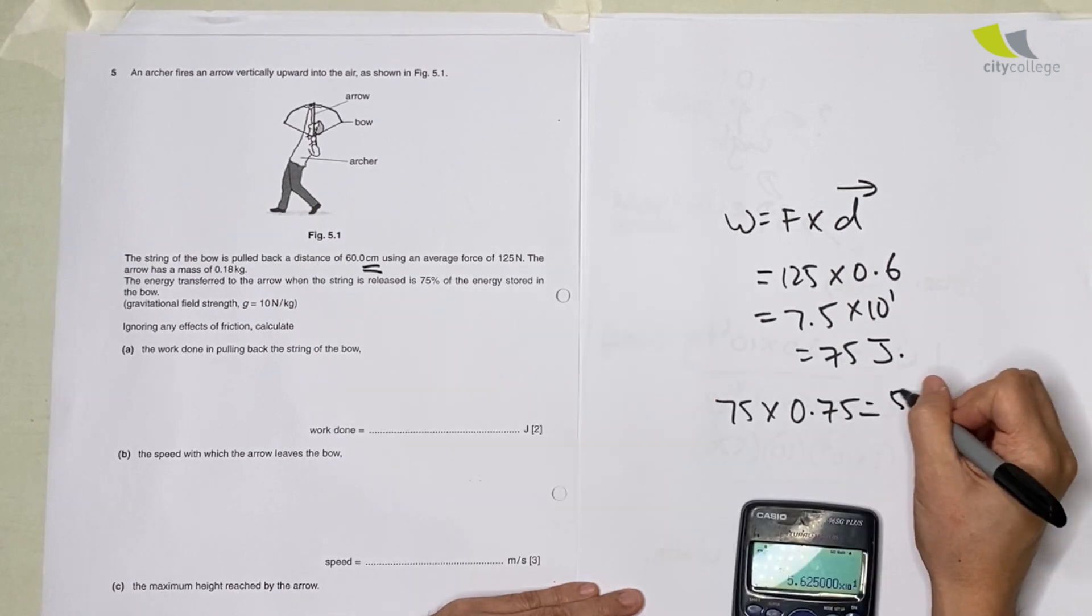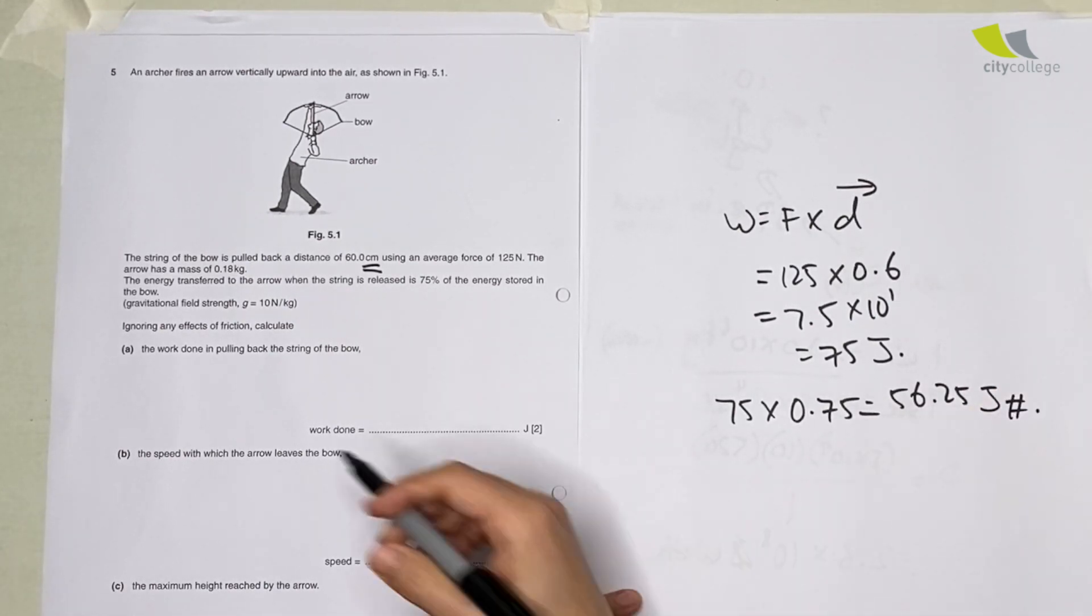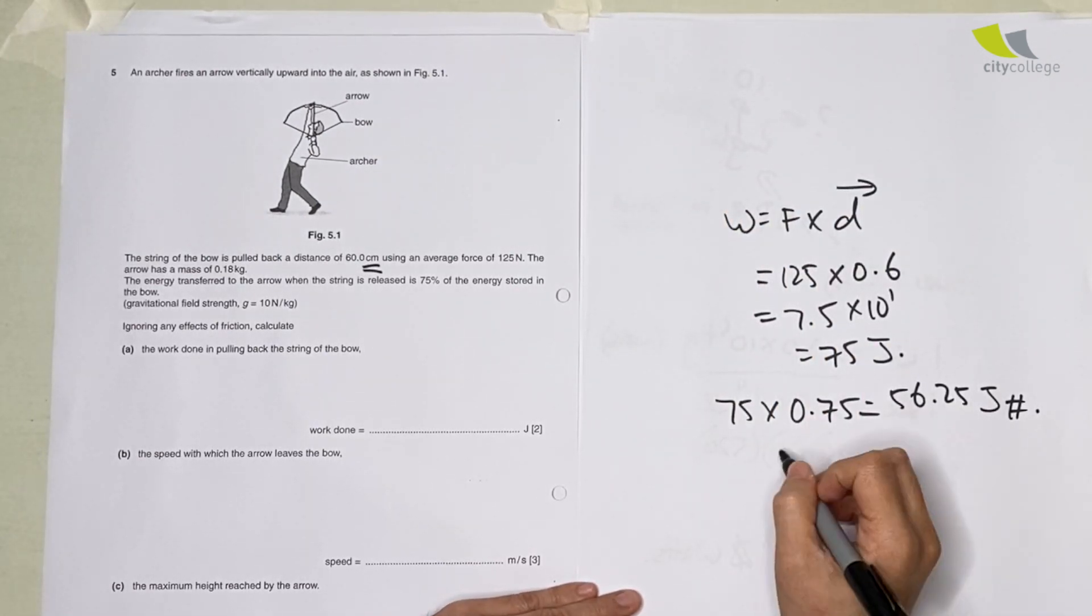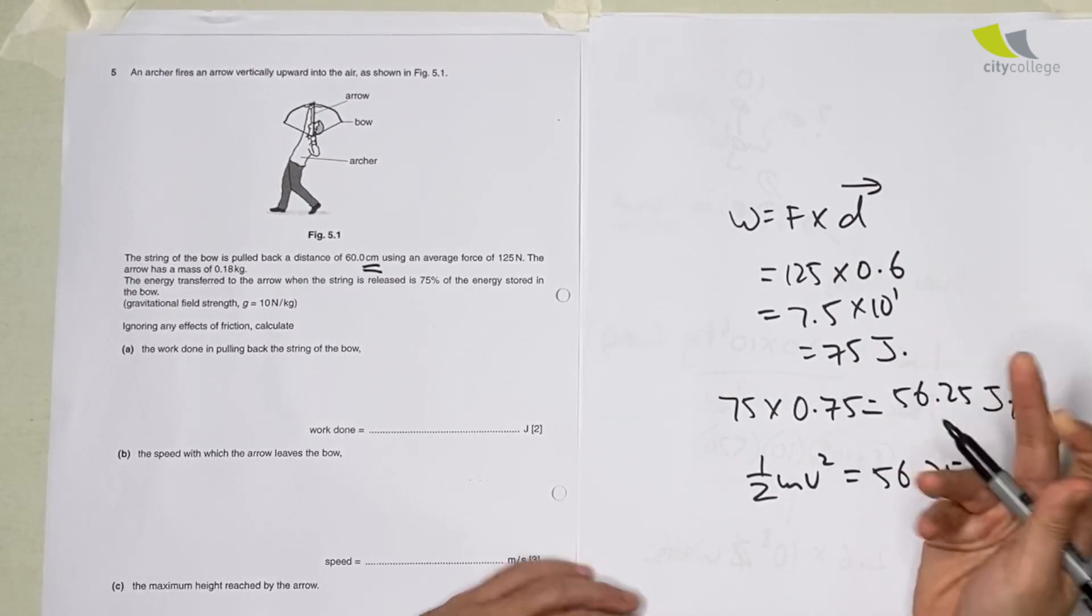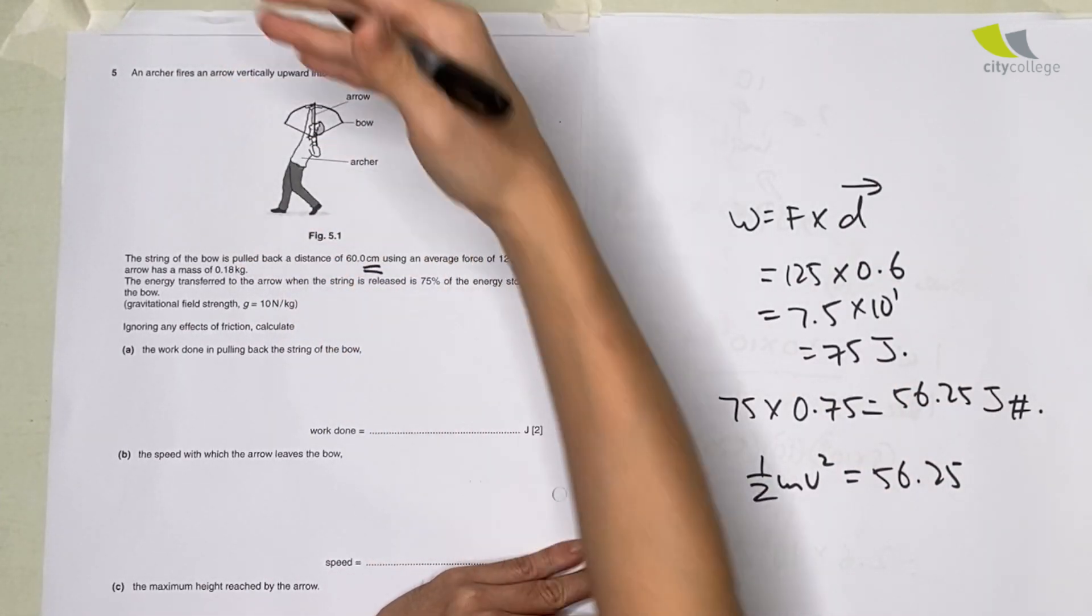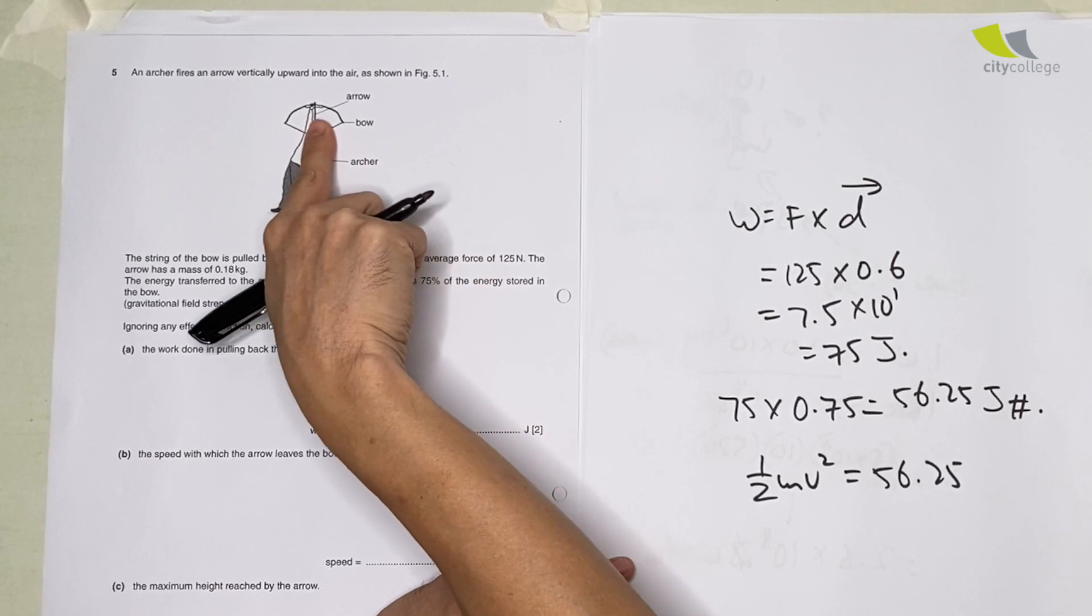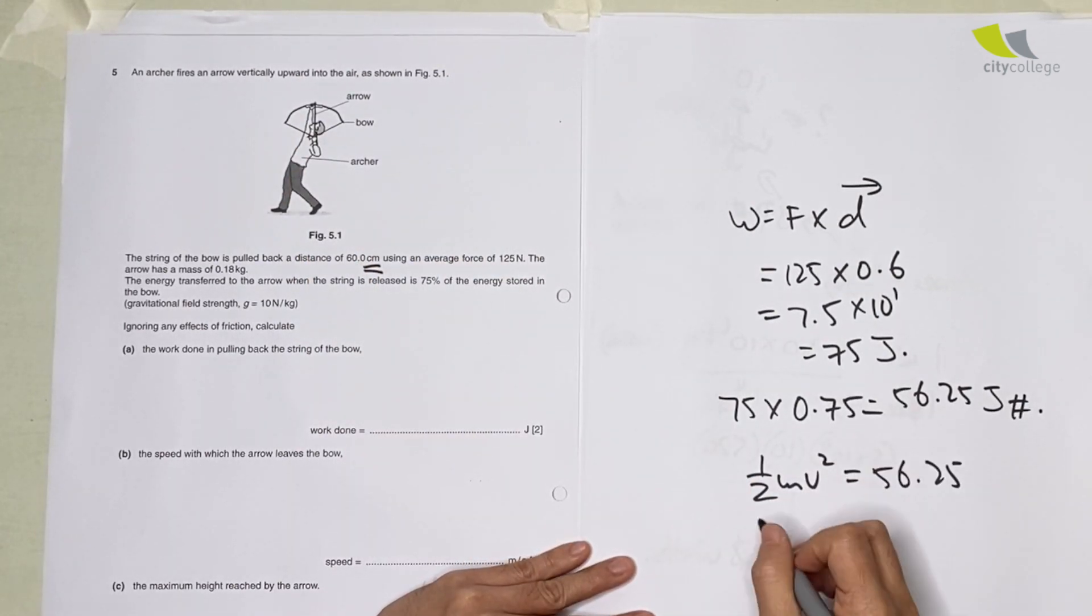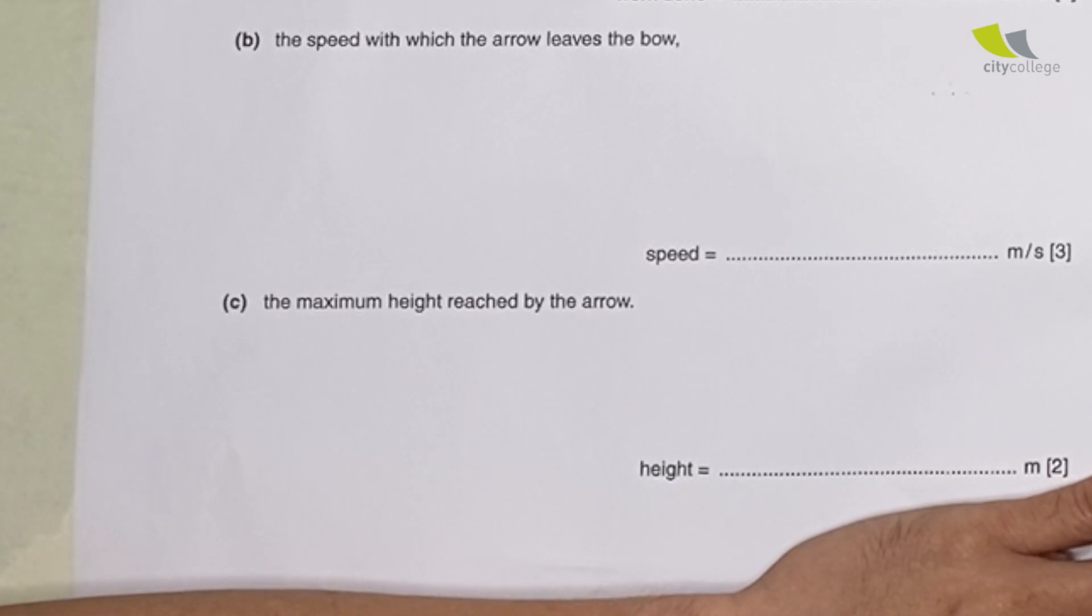To calculate the speed at which it leaves, we have to equate half mv squared with 56.25, because all this elastic potential energy is going to be transferred to kinetic energy. When the arrow first leaves, because it's going against gravity, you will have the maximum velocity, then energy will be transferred to gravitational potential energy. So you just have to solve this: half m will be 0.18, v squared, then you just do the rest.